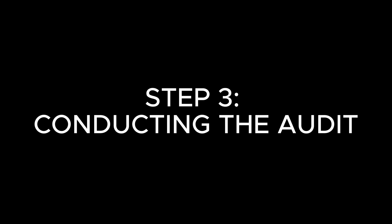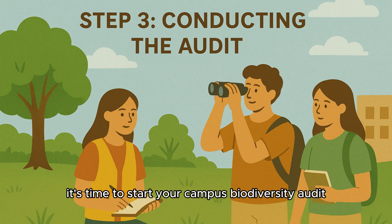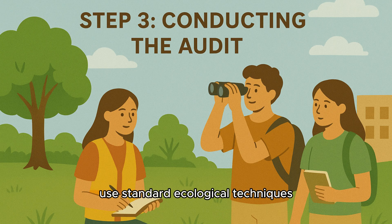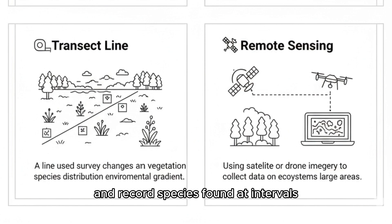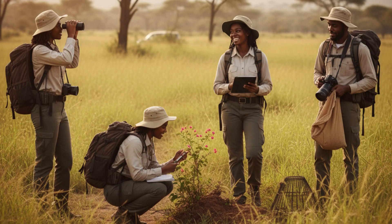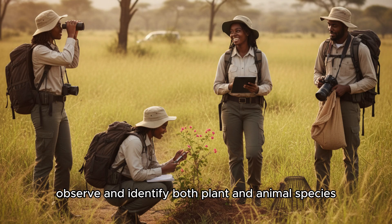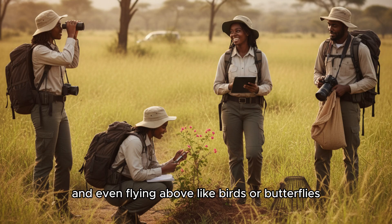Step 3: Conducting the Audit. Once you receive your location and instructions, it's time to start your campus biodiversity audit. Use standard ecological techniques such as the transect method, where you walk along a straight line and record species found at intervals, or the point count method, where you stand at specific spots and record organisms you can see or hear. Observe and identify both plant and animal species — those on the ground, on tree trunks, in bushes, and even flying above like birds or butterflies.